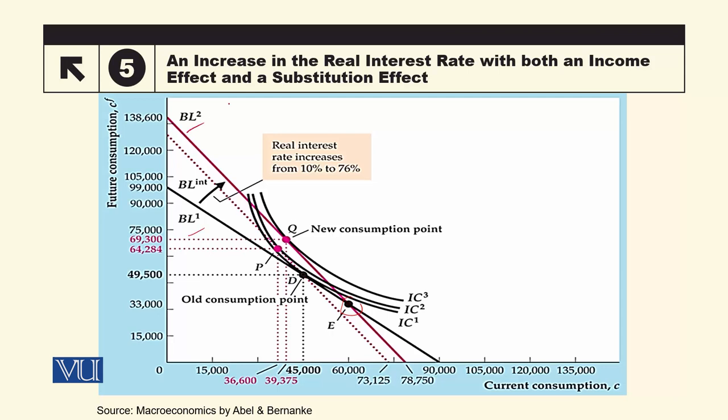BL1 اور BL2 میں difference یہ ہے کہ BL2 steeper ہے اور BL1 flatter ہے۔ BL2 جو ہے وہ higher interest rate کو show کر رہی ہے اور BL1 جو ہے وہ low interest rate کو show کر رہی ہے۔ Initially individual BL1 پر ہے — 10% interest rate — اور اس کا equilibrium point D ہے، کیونکہ indifference curve اس black والی budget line کا tangent بن رہا ہے D پر۔